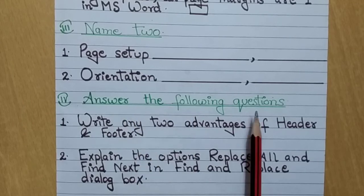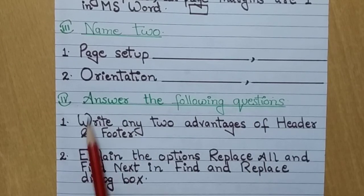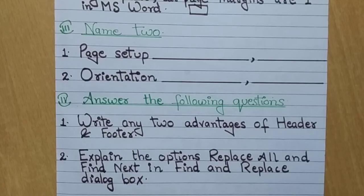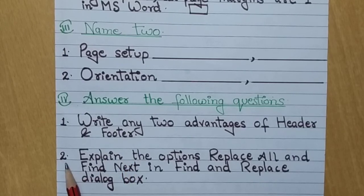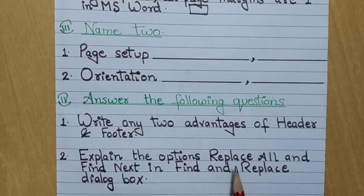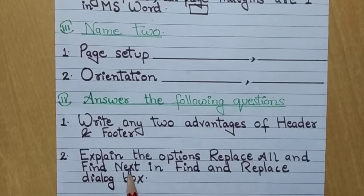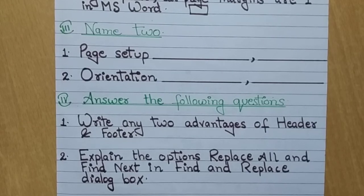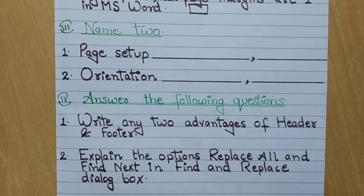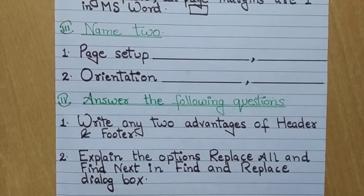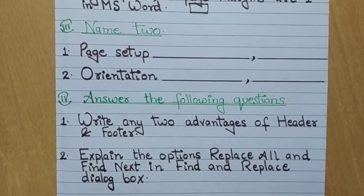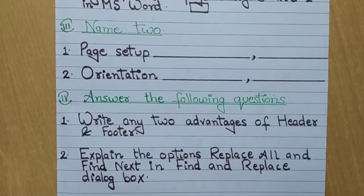Next it is answer the following questions. Aapko kya karna hai, answer karna hai in questions ke. First one, write any two advantages of header and footer. Do advantages aapko batane hain kis ke, header and footer. Second it is explain the options replace all and find next. Yaani aapko explain karna hai kaun-kaun se options, replace all and find next. Kis mein, find and replace dialogue box mein aapko batana hai ki replace all and find next ka function kya hai, ye log kya karte hain. So you will do these questions in your classwork copy and do it sincerely after learning the chapter properly. Again I am telling you do it sincerely, don't do cheating. So that's all for today, thank you.